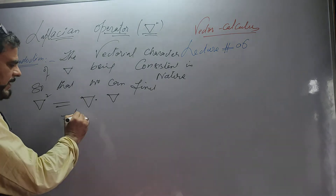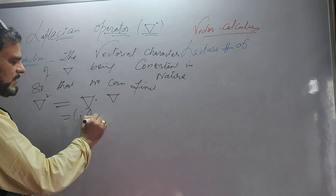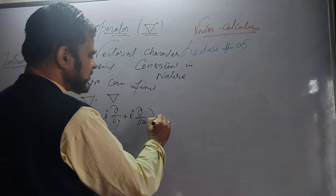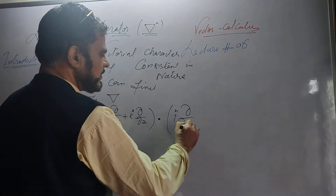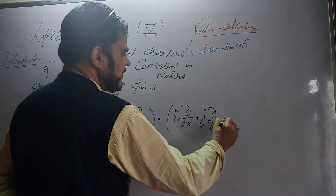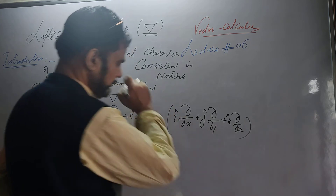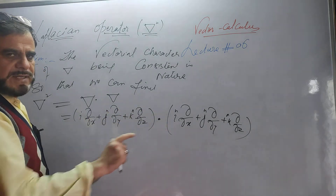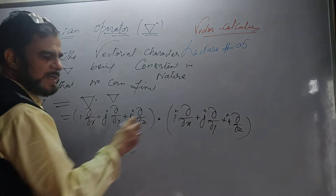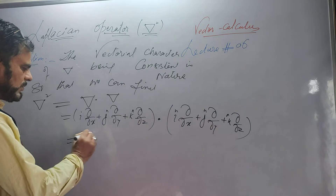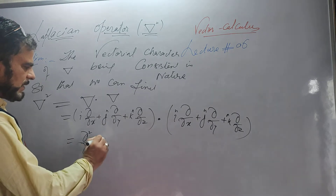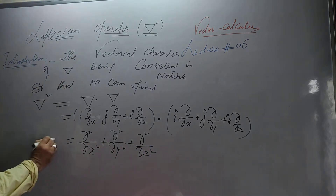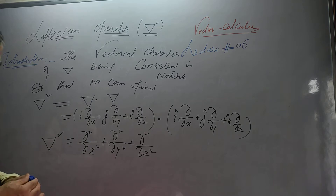What is delta? It is the vector operator: i ∂/∂x + j ∂/∂y + k ∂/∂z. We take its dot product with itself: (i ∂/∂x + j ∂/∂y + k ∂/∂z) · (i ∂/∂x + j ∂/∂y + k ∂/∂z). Operating the dot product — i·i = 1, i·j = 0 — we simply multiply matching components. This gives ∂²/∂x² + ∂²/∂y² + ∂²/∂z², which is your delta squared.